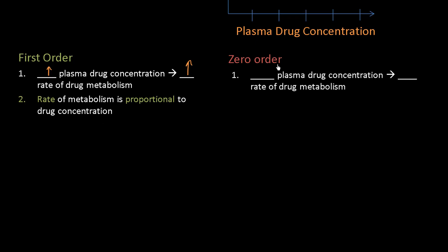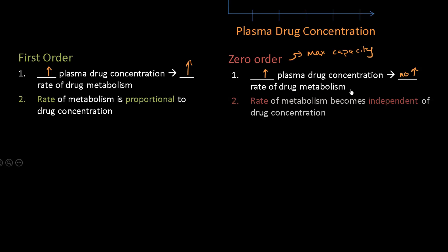With zero order kinetics, we are at max — full — capacity. All of our enzymes are working on the substrate, the drug. So if all of our enzymes are working and I increase the plasma drug concentration, there are no extra enzymes to put to work, and therefore there will be no increase in the rate of drug metabolism. Once we reach this point, the rate of metabolism becomes independent of drug concentration.